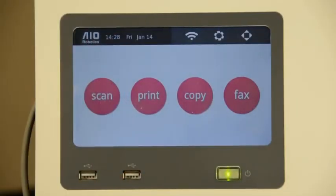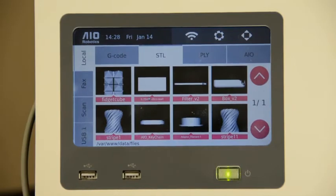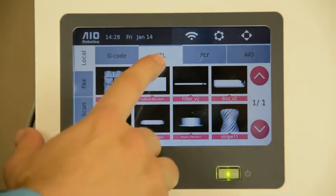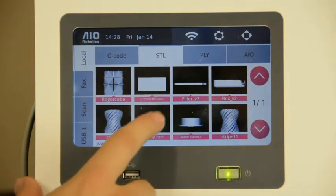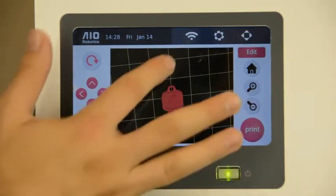This is the screen of ZEUS and today we look again into print. I click the print button and here you see the file menu of the ZEUS. Today we look into the STL files. Here I will load the AAO keychain file. We can look at it from all sides.